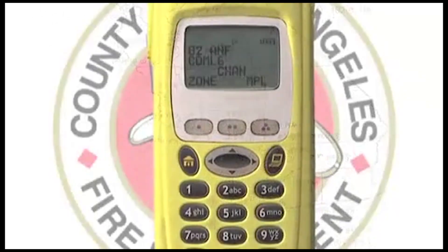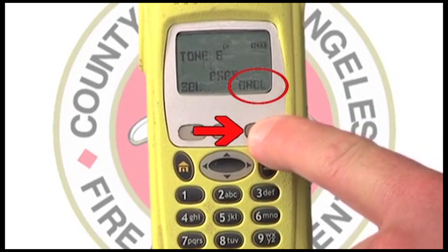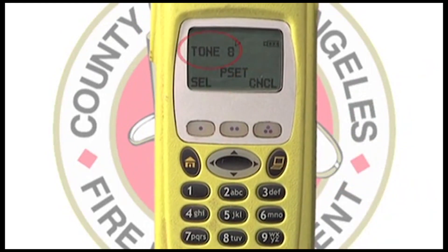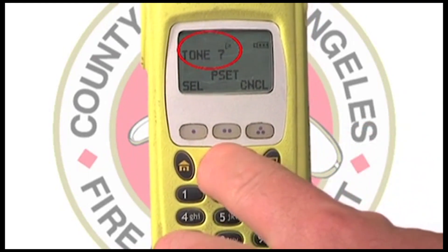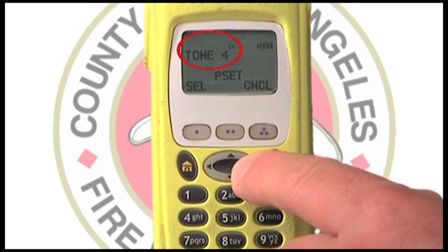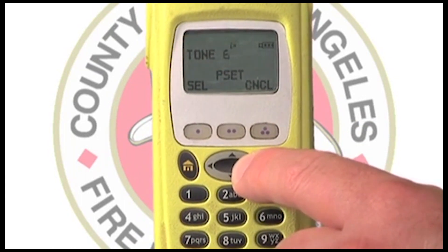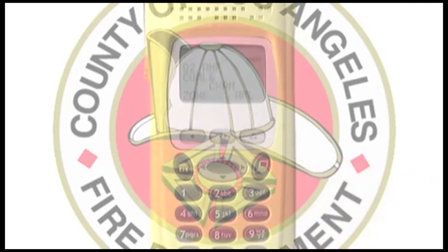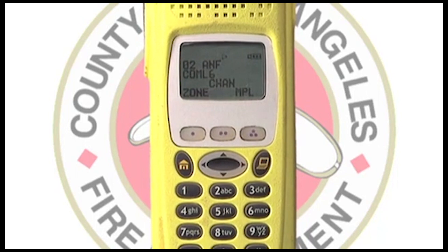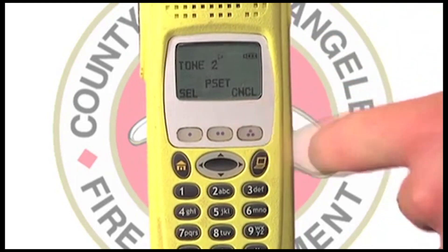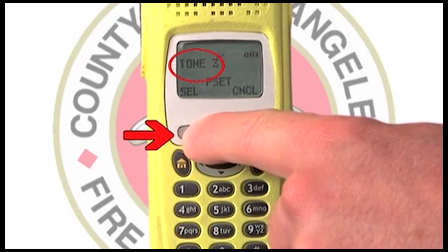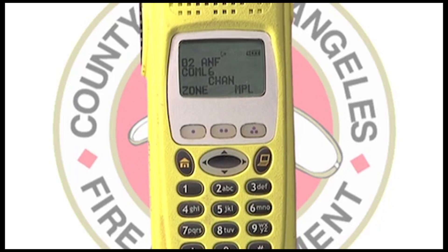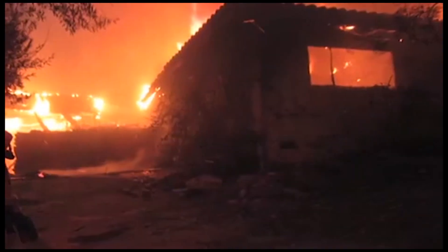To change the MPL tone, select it by using the corresponding soft key. Now the current tone appears at the top of the screen. Change the tone using the left or right arrows of the four-way navigation button. You can also select a tone by directly entering the tone number using the numeric keypad. This is the best method when you know what the tone number is. Once the desired tone appears in the LCD, press select using the corresponding soft key. The channel now appears in the LCD, programmed with the correct MPL tone.